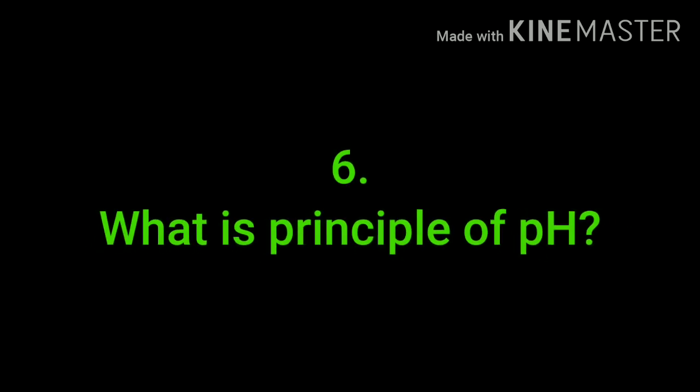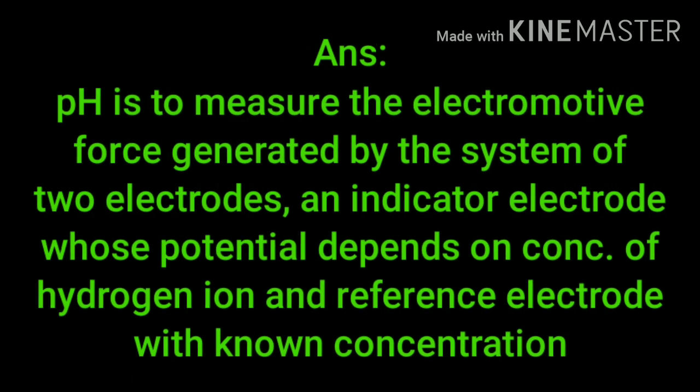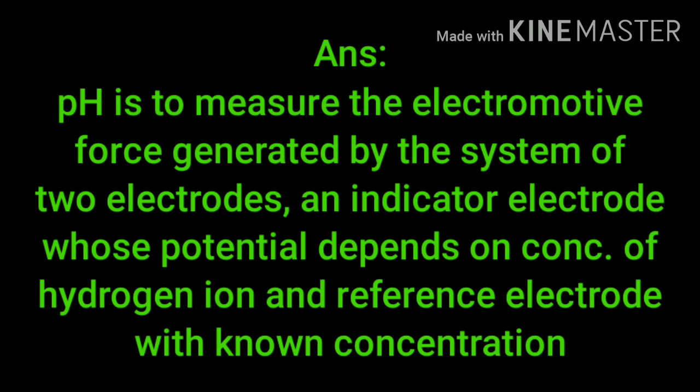What is the principle of pH? pH is a measure of the electromagnetic force generated by a system of two electrodes — an indicator electrode whose potential depends on the concentration of hydrogen ions, and a reference electrode with a known concentration.